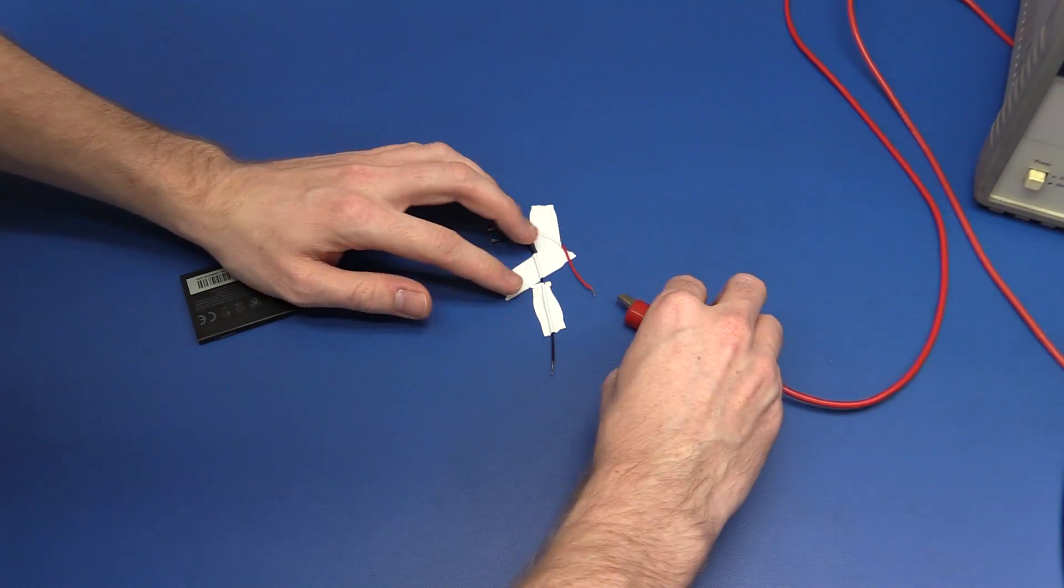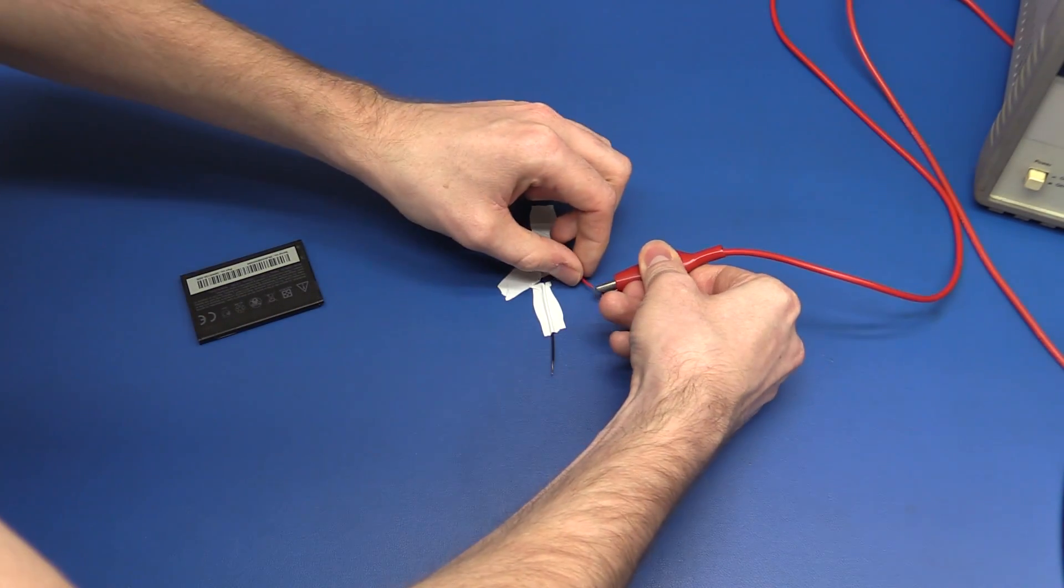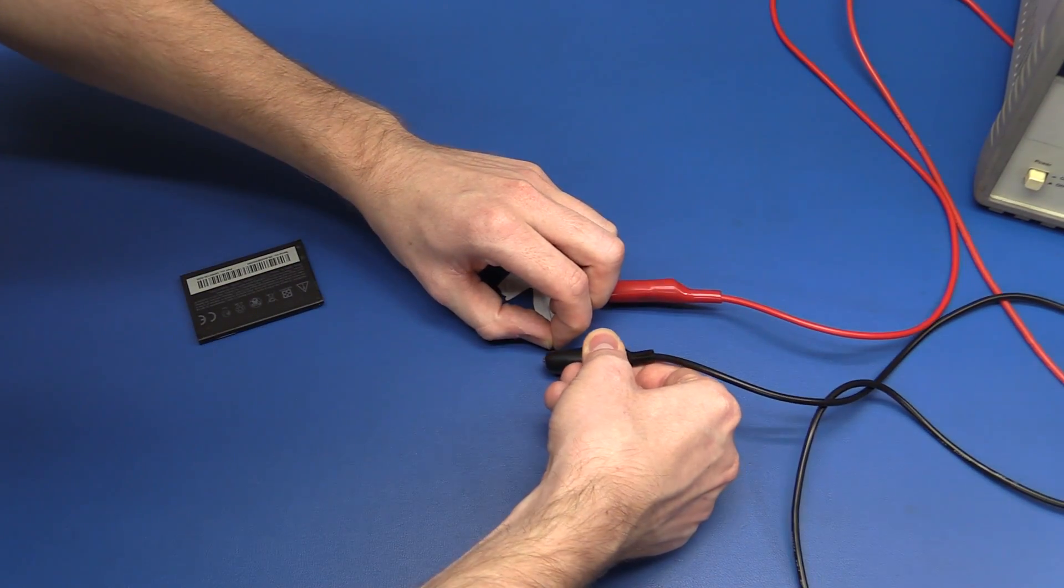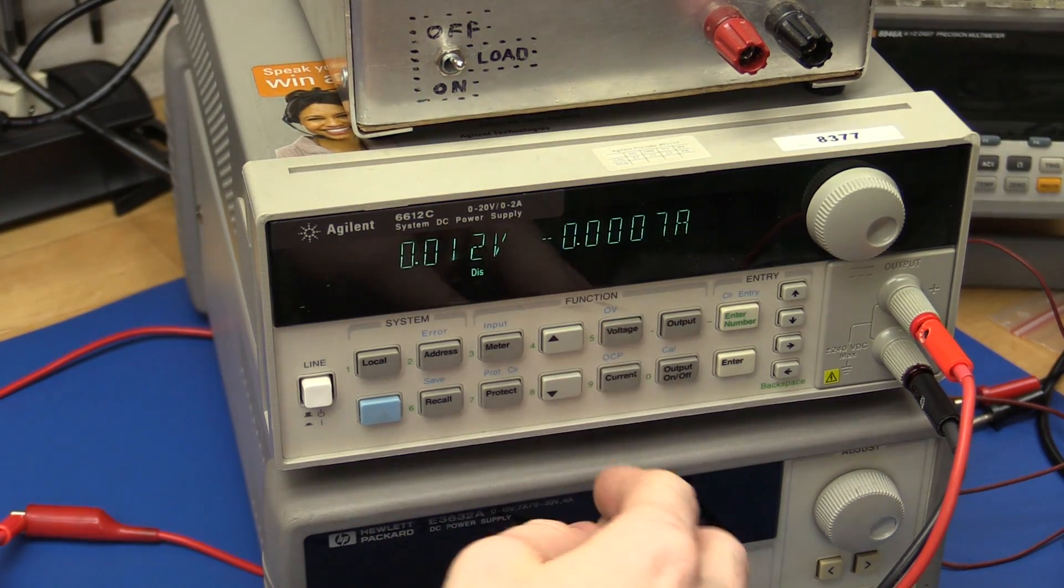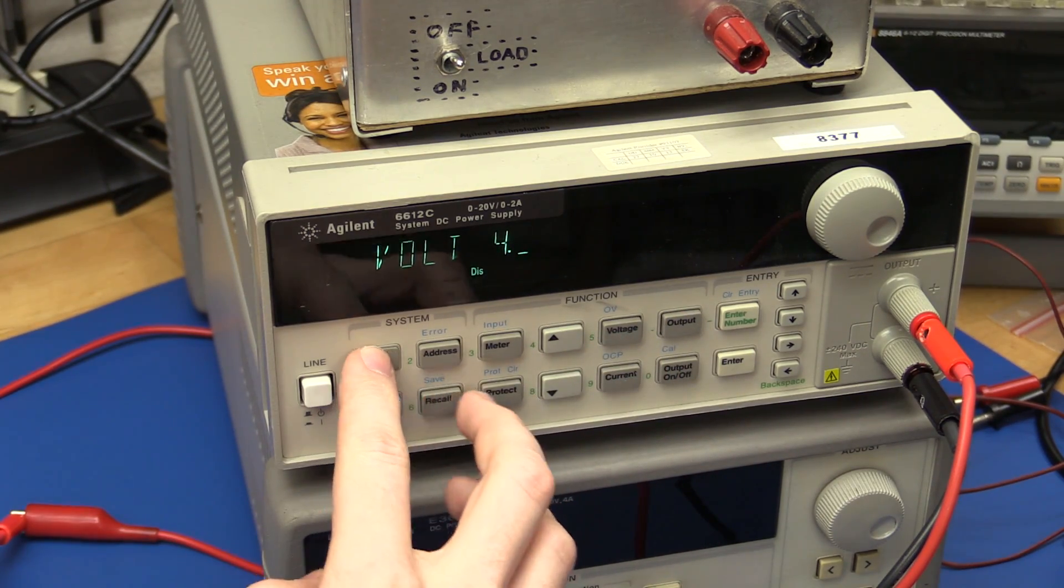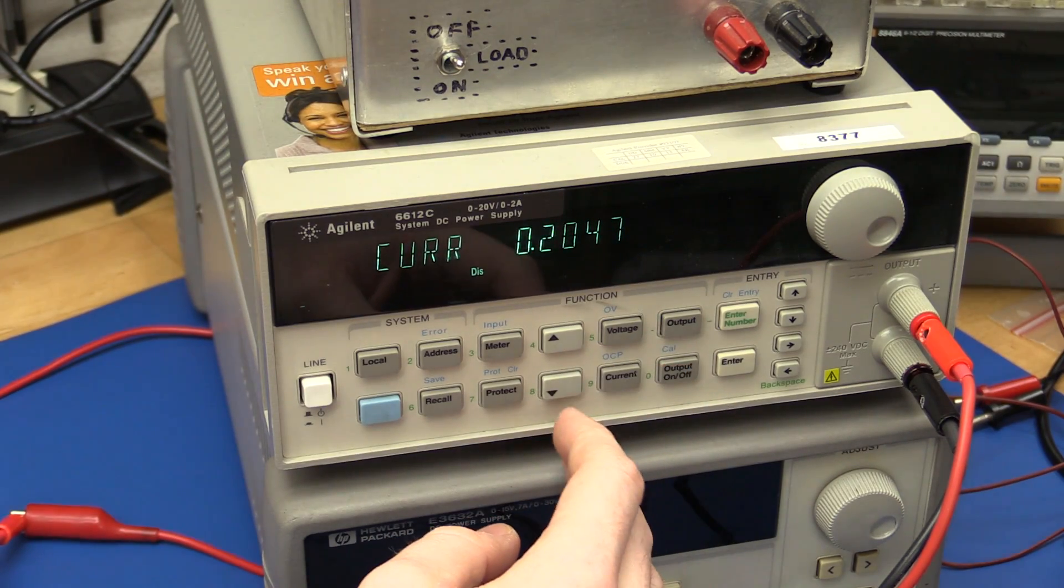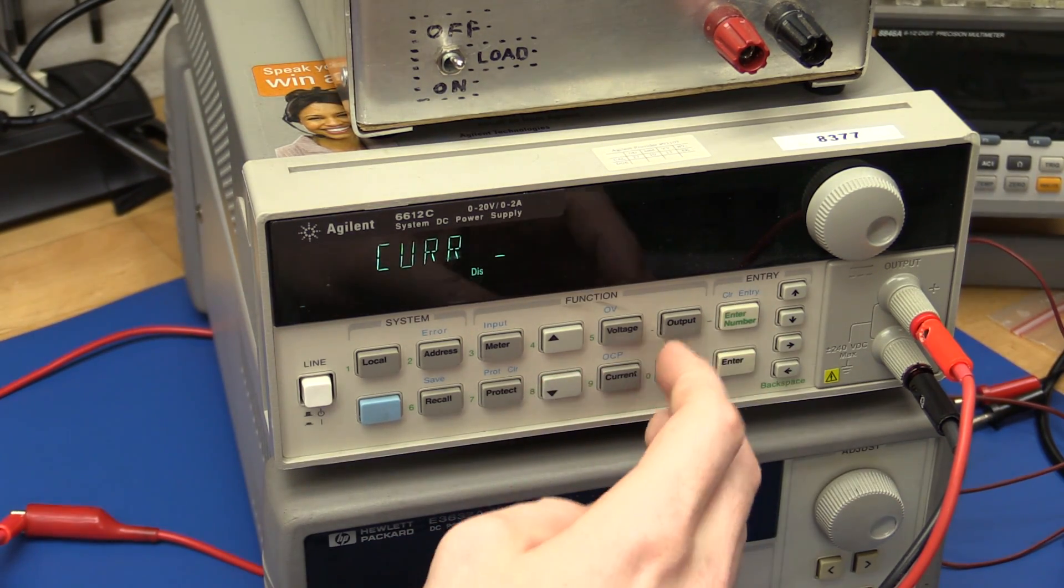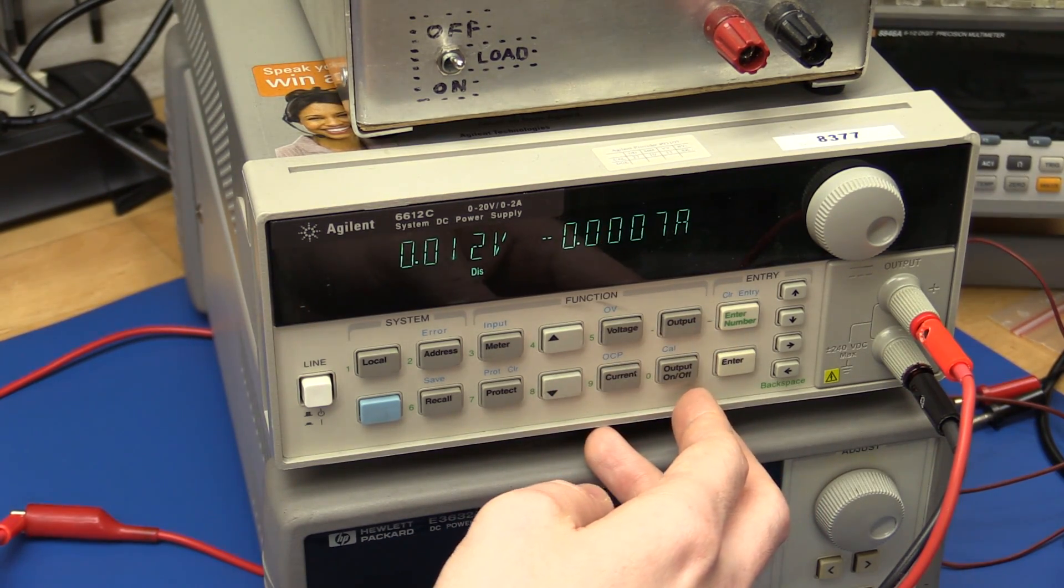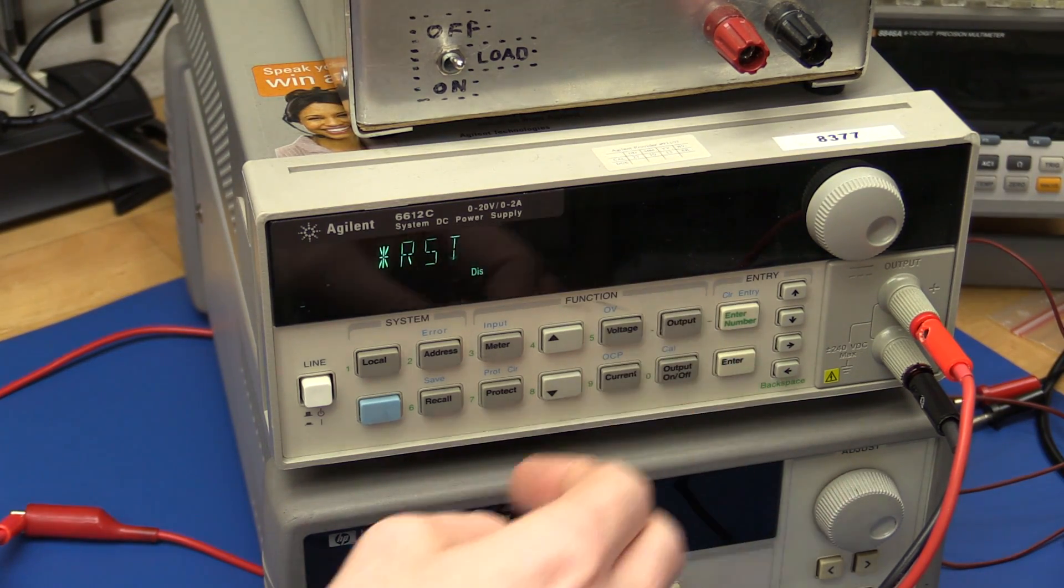So now we just hook up the power supply. And if we set it to 4.19 volts or something like that, and let's set the current to, let's say, just 0.5 amps. Like that. And then we can enable the output.